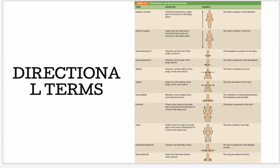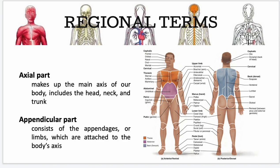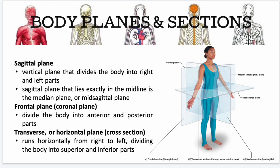Your axial part makes up the main axis of your body — that includes your head, neck, and trunk. Your appendicular part consists of the appendages or limbs which are attached to the body's axis. Your sagittal plane is a vertical plane that divides the body into right and left parts. The sagittal plane that lies exactly in the midline is called the midsagittal plane. The frontal plane divides the body into anterior and posterior, and the transverse plane runs horizontally dividing the body into superior and inferior parts.